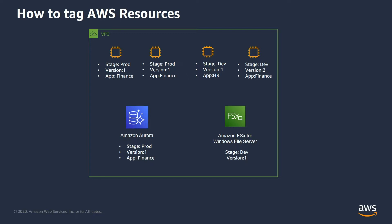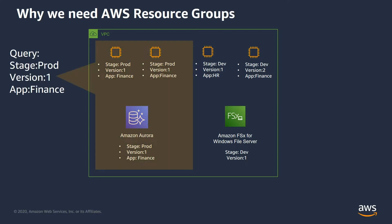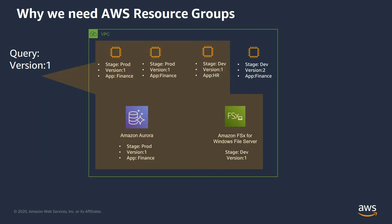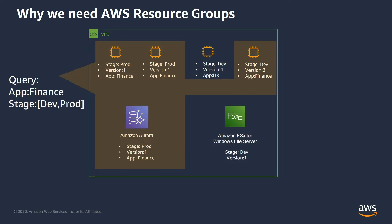If you don't have this grouping mechanism, you need to go into different AWS console sections to get those resources. Here you can send a query that says give me all the resources where stage equals prod, version equals one, and app equals finance. You can also query for version equals one, which will cover even Amazon FSx and another EC2 instance in the development environment. Similarly, you can query for app equals finance and stage is either development or production, to arbitrarily categorize any AWS resources and quickly access them.